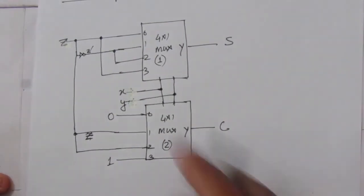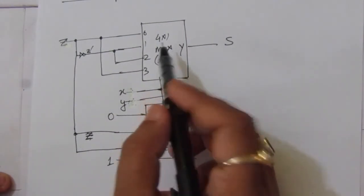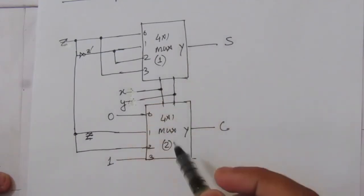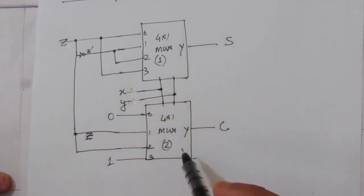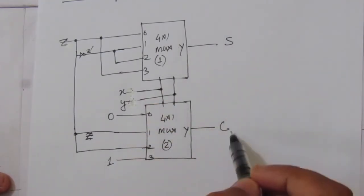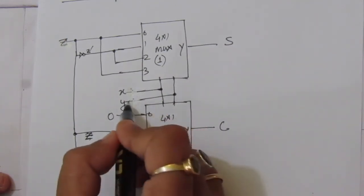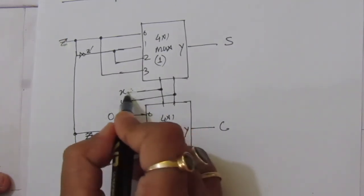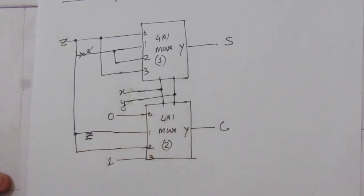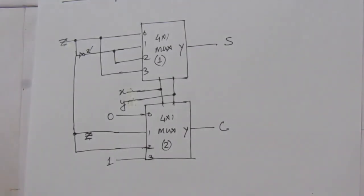This is the circuit diagram of a full adder using two 4-to-1 multiplexers. One multiplexer gives the sum output and the other gives the carry output. Thank you for watching. If you have any questions, please put them in the comment section below. Also like, share, and subscribe to my channel. Thank you.